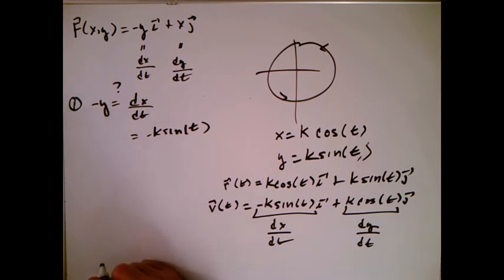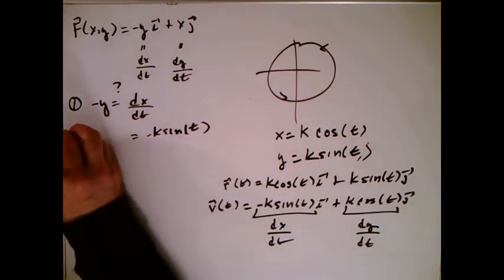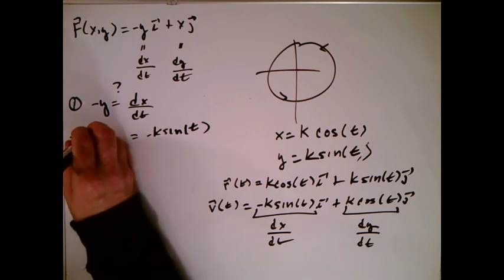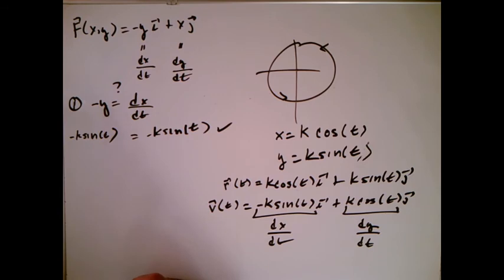And minus y, well, y is k sine t. So minus y is minus k sine t. And we can see that that part of the motion is actually correct.